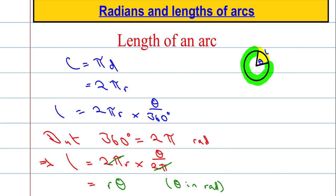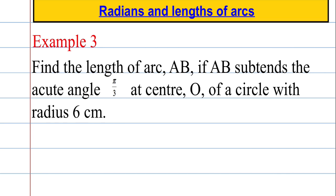OK, let's see how this applies to a simple example. I want to find the length of an arc AB if AB subtends the acute angle π over 3 at centre O of a circle with radius 6. Alright, so I'm going to attempt to draw a quick sketch of this. We've got some sort of arc, like so. We've got an angle at the centre, π over 3, and the radius is 6. This is a, this is b, and this is the centre O. I want the length of the arc AB.